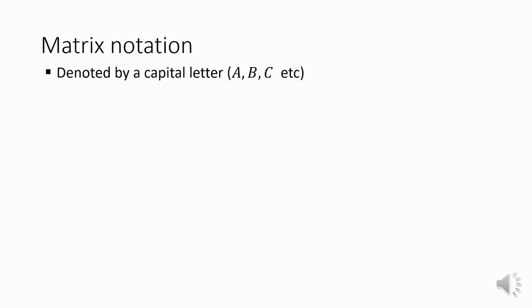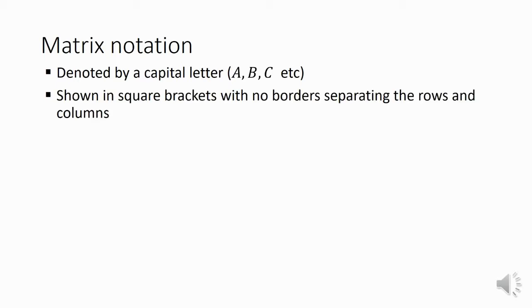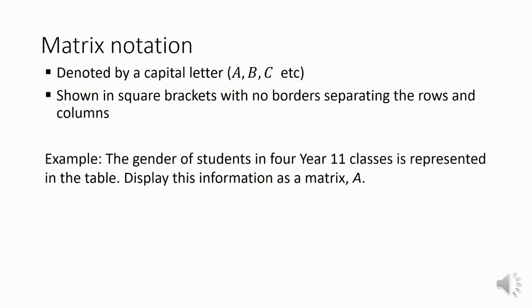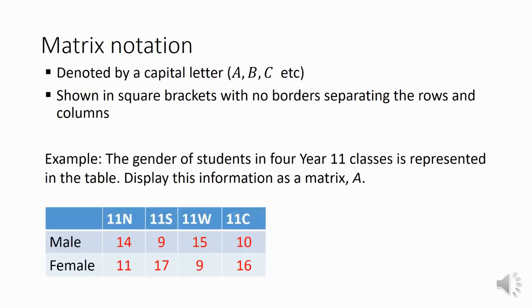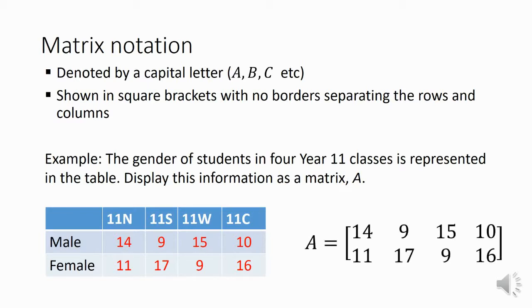Some quick matrix notation. It's important that you use a capital letter to name a matrix - it's not a number. It's something else, like a set or an event in probability. It's written in square brackets with no lines or borders separating the rows and columns. It's really important to make sure there's enough space between different entries so that you can tell they're two different entries. For example, if we look at the gender of students in four different year 11 classes, we can display this table as a matrix.